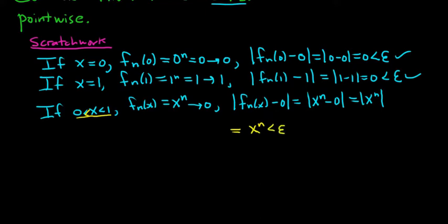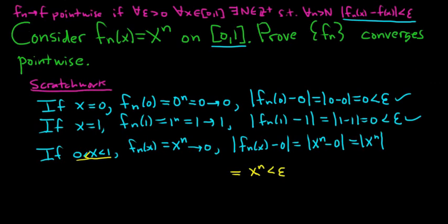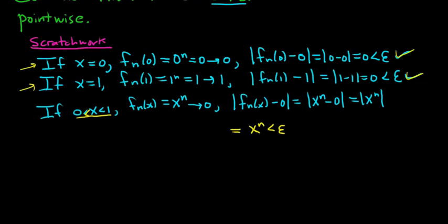We need to find a natural number N. To do that, let's solve the inequality x^n < epsilon for little n. Since n is in the exponent, we take the natural log of both sides: ln(x^n) < ln(epsilon). Using the power rule for logs, we bring down the n: n·ln(x) < ln(epsilon). Then we divide by ln(x) to solve for n.